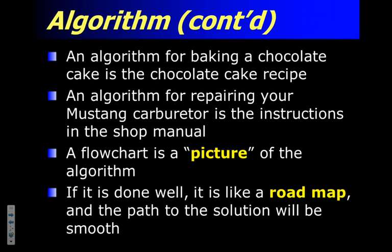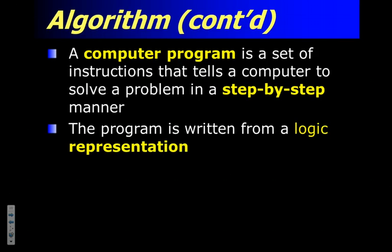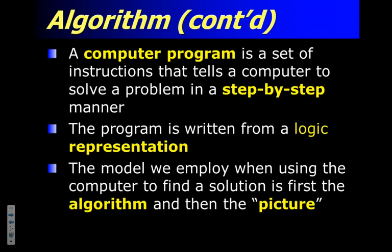For some of us, flowcharts help because we're visual people. For others, it can be a bit of a time waster. But a flowchart should work like a roadmap that gets you from the start to the end of solving a problem — which is exactly what a computer program is. A computer program is also a step-by-step set of instructions, and you write the code using an algorithm. So they mesh together in this way.